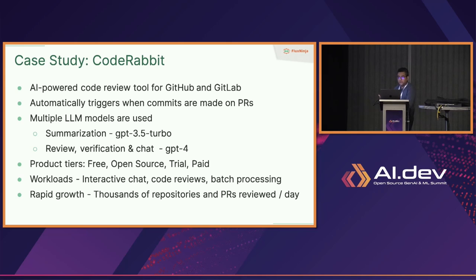They want to provide different quality of service across tiers. They also have different kinds of workloads — a lot of background code review workloads running each time a commit happens, but also interactive chat where users are asking AI questions in the context of code and expecting real-time responses. So there's an interactive workload running alongside batch processing and background workloads.